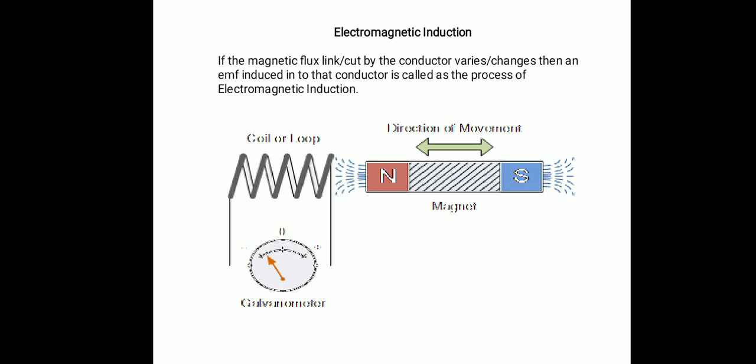Due to the movement of that magnet, the flux generated by the magnet which is linking to the coil changes with respect to time. The flux generated from that magnet which is linking to the coil also changes due to the movement of that magnet. Due to the changing or varying flux linking to that coil, an EMF is induced into that conductor or coil, which is called as the process of electromagnetic induction.